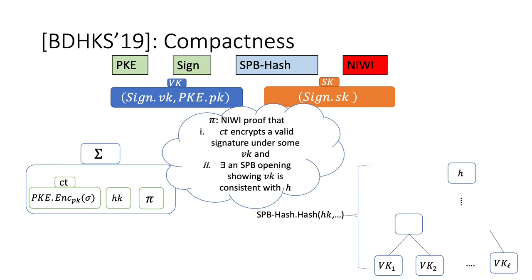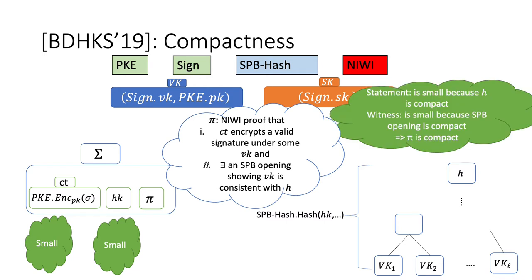Let us now look at the properties of this construction, starting with the size. The encrypted signature and hash key are unrelated to the ring size by default, and so do not grow with it. Turning to the proof, the statement is small because the hash root H is compact, and the witness is also small because the SPB opening, which is like the Merkle tree opening and has logarithmic size in the ring size, is compact. So we can conclude that the overall proof is compact, and therefore the ring signature as constructed is also compact.